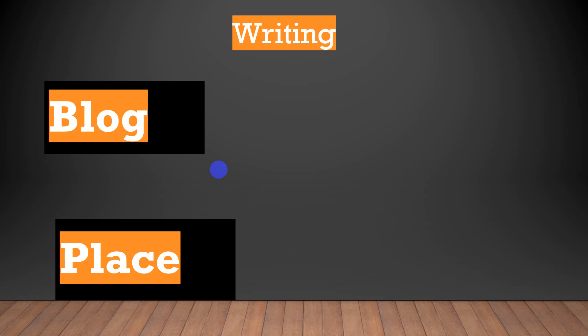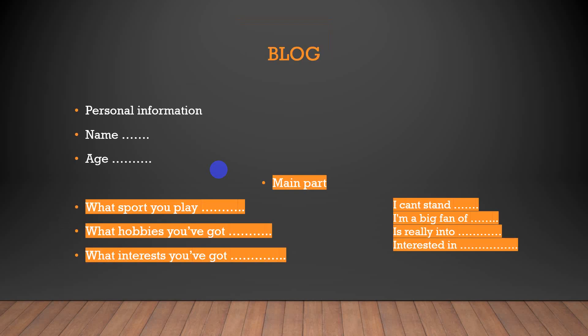Now we move to the writing section. You will find two writing tasks and you must choose one: either write a blog or write a description of a place. To write a blog, start with personal information — your name and age. Then move to the main part: what sport you play, what hobbies you have, what interests you have. You can use expressions like 'I can't stand' or 'I'm a big fan of'.